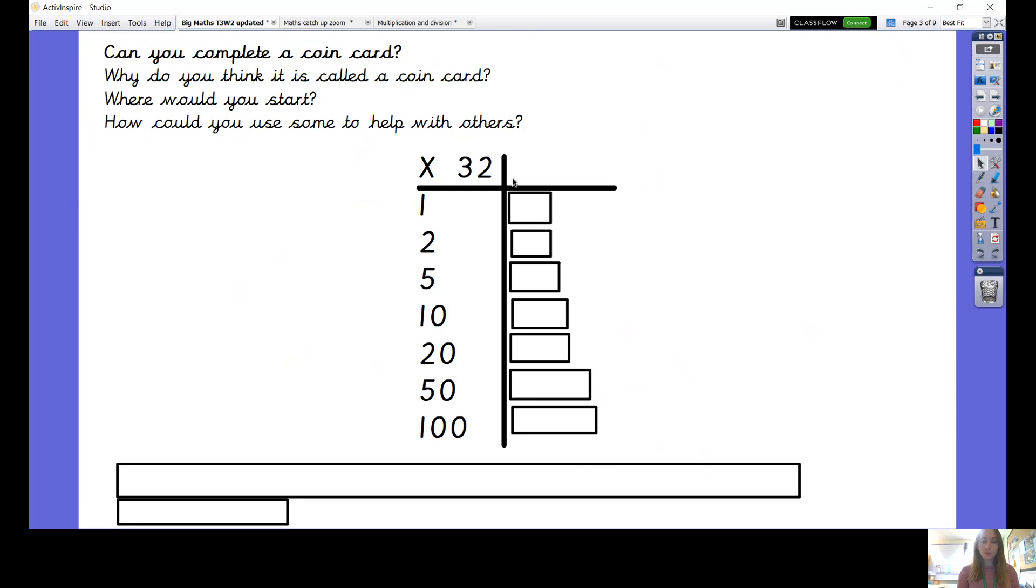The way we do this is we draw our two lines, we're multiplying by 32 today so that's why I've got times 32 here and then I write up my numbers 1, 2, 5, 10, 20, 50, and 100. Today I'm not going to ask you to do this in your books, I'm just going to show you how to do it together and then on the following days you can do one in your book. Obviously if you'd like to do it in your book anyway today that's fine, you can pause the video at any point, but I'm just going to be talking through how to do it.